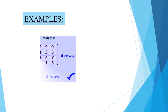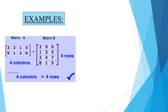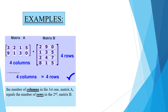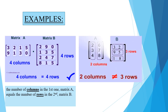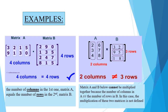In the first example, matrix A has four columns and matrix B has four rows, so the order is the same — 4 columns equals 4 rows — so it is conformable for multiplication. In the second example, matrix A has two columns and matrix B has three rows; the orders are not the same, so it is not conformable for multiplication.